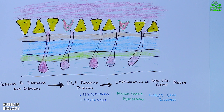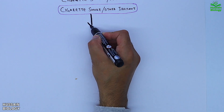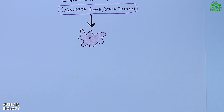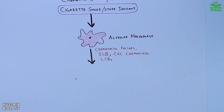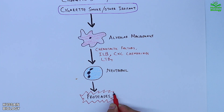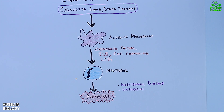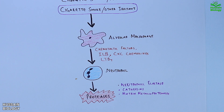In COPD, cigarette smoke or other irritants activate alveolar macrophages, which secrete chemotactic factors like IL-8, CXC chemokines, and LTB-4. These factors drive activation of neutrophils, which secrete inflammatory factors and proteases including neutrophil elastase, cathepsins, and matrix metalloproteinases. These abnormal quantities of proteases overpower the anti-protease activities of epithelial enzymes, leading to uncontrolled proteolysis and subsequent lung damage.